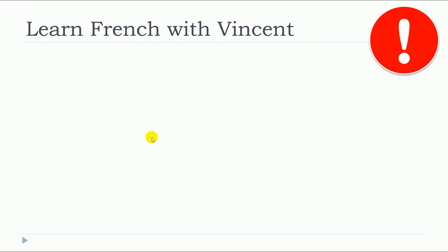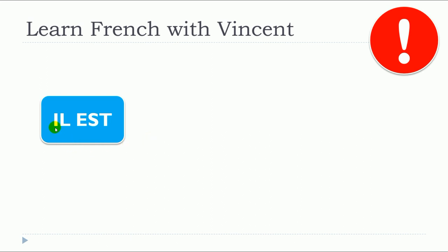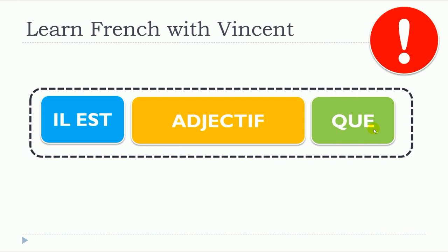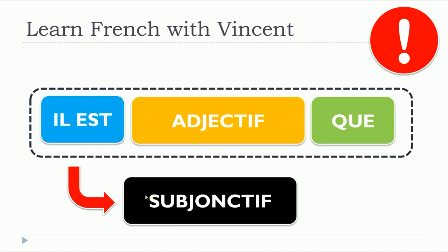The important thing that we need to remember is that we will structure our sentence in such a way. We will start with « il est ». Remember that in that case, « il » will stand for « it » and not for « he ». Then we will put the adjective, then « que ». And after all that, we will introduce the subjonctif. So it means that the verbs that will come after this structure will be in the subjonctif.